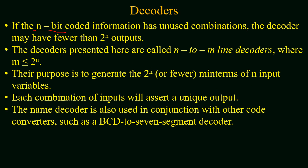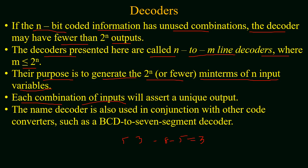If the n-bit coded information has some unused combinations, then the decoder may have fewer than 2^n outputs. For example, if we have five discrete elements, three bits are required, giving eight possible combinations, but only five are used — leaving three unused. In this case the output will be less than 2^3. Decoders are normally described as n-to-m line decoders where m is less than or equal to 2^n. The purpose of a decoder is to generate 2^n or fewer minterms for the given n input binary variables, and each input combination asserts a unique output. The decoder name is also used with other converters such as BCD to seven-segment decoder.